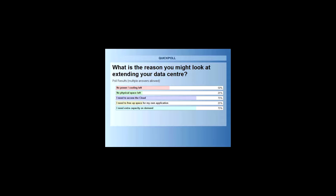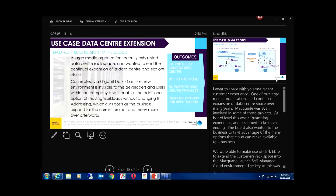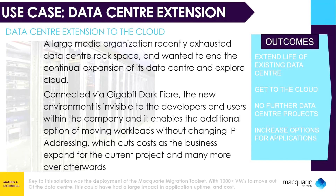Now I want to refer to a specific customer of ours that has actually done this and taken us on a bit of the journey with them. This is one of our large media organizations, and they've had continual expansion of their data center space over many years — Macquarie was even involved in some of these projects. At board level, this was a frustrating process because the business kept coming back wanting more changes to the data center. We were able to make use of dark fiber to extend their rack space into our self-managed Launch Cloud environment, and the key thing they enjoyed was that we mapped all of their existing VLANs and security zones into our cloud instance.